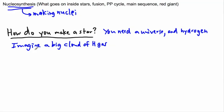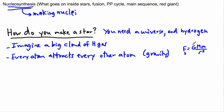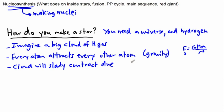The key thing is: every atom attracts every other atom. That's because we have gravity — gravity is an attractive force. Remember the equation: F = G·M·m / r², the force due to gravity between two masses, where G is 6.67 × 10⁻¹¹. Every atom in this hydrogen cloud attracts every other atom, and as a result the cloud will slowly contract due to gravity.